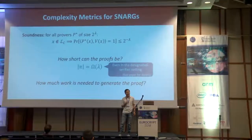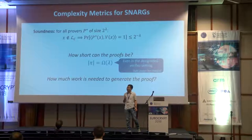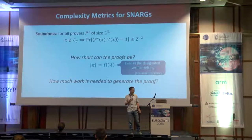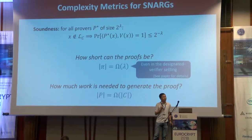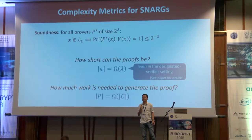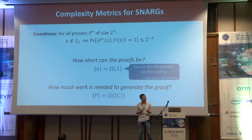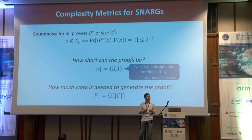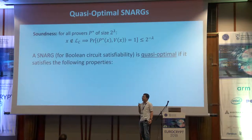Another metric is prover complexity: how much work does the prover have to invest to generate a proof of a true statement? A simple lower bound is that the amount of work the prover has to do is proportional to the size of the circuit it's trying to generate a proof for. Having defined these two complexity metrics, we can define the notion of a quasi-optimal SNARK, which simultaneously minimizes both of these quantities.